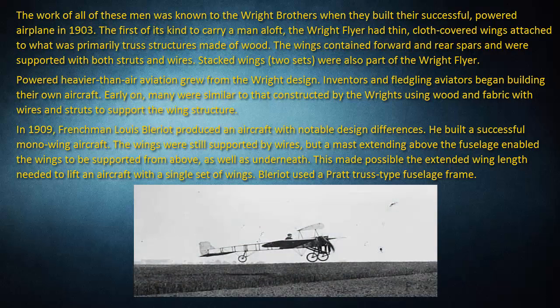In 1909, Frenchman Louis Blériot produced an aircraft with notable design differences. He built a successful mono-wing aircraft. The wings were still supported by wires, but a mast extending above the fuselage enabled the wings to be supported from above as well as underneath. This made possible the extended wing length needed to lift an aircraft with a single set of wings. Blériot used a Pratt truss-type fuselage frame.